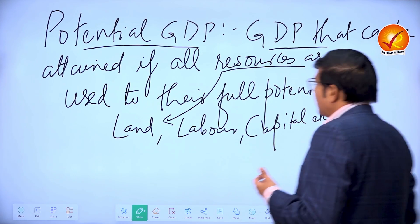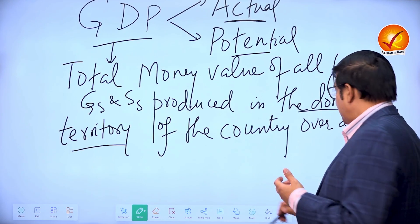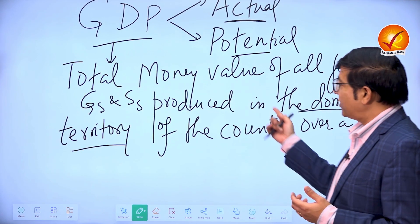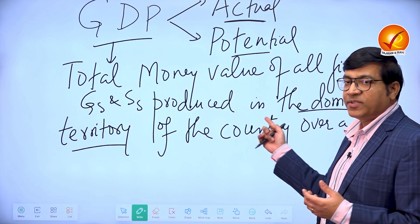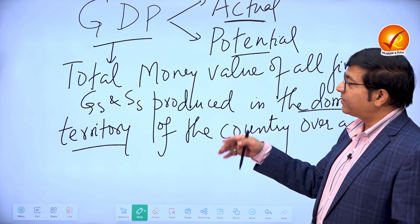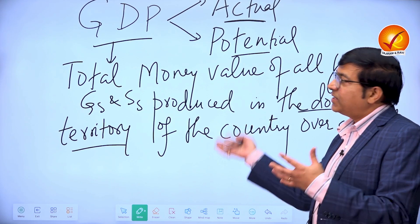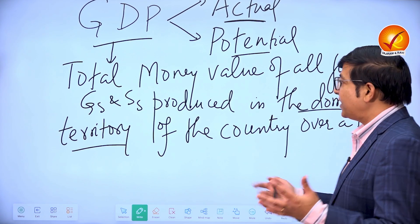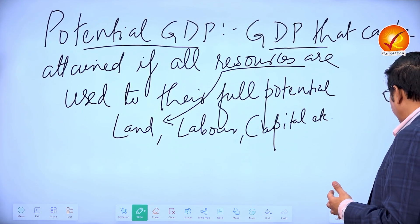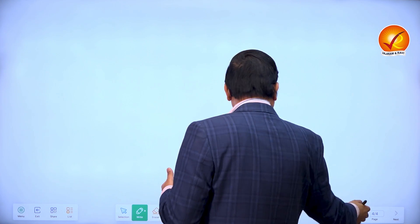One is that one definition of GDP that I gave was the money value of all final goods and services produced. This is a supply side definition. There is a demand side definition also, and that is something which is often more useful in handling such a question.